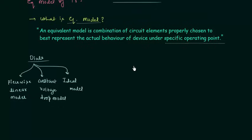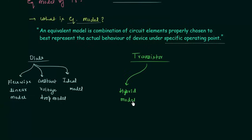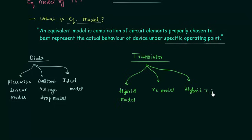In the same way we require equivalent models for the transistor. In the case of transistors, the first equivalent model is the hybrid model. After this we will study the RE model, which is also called the dynamic emitter resistance model. In the case of diodes we generally use the constant voltage drop model, while in the case of transistors we generally use the RE model.